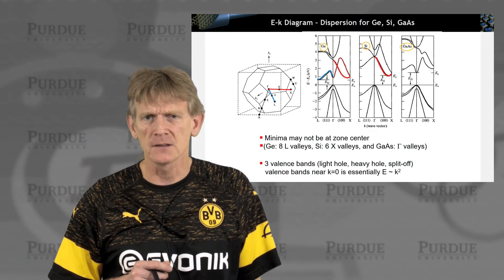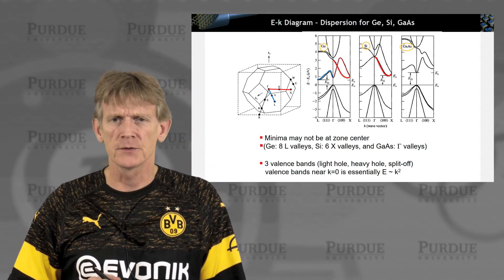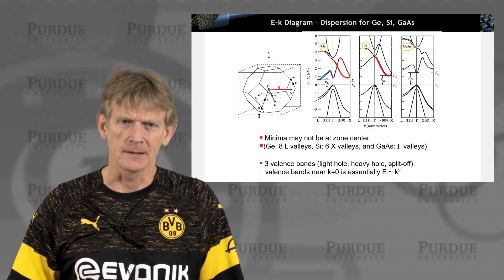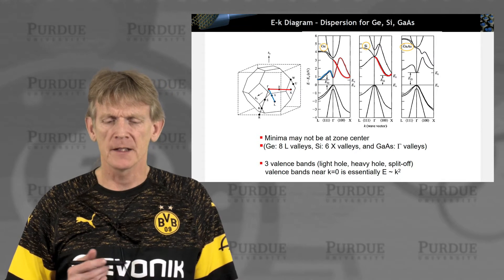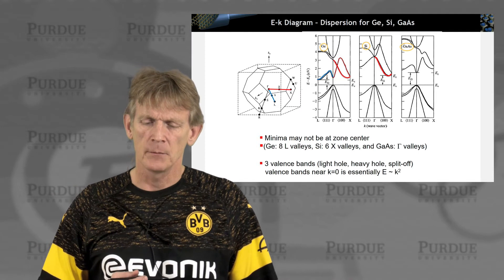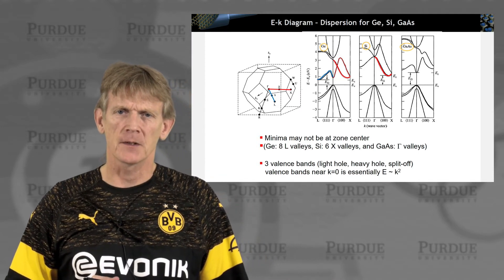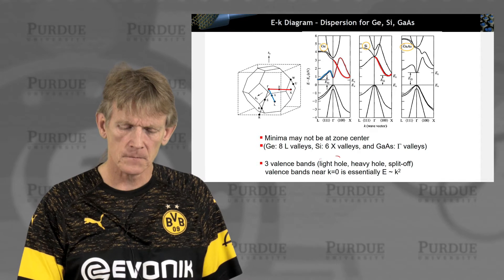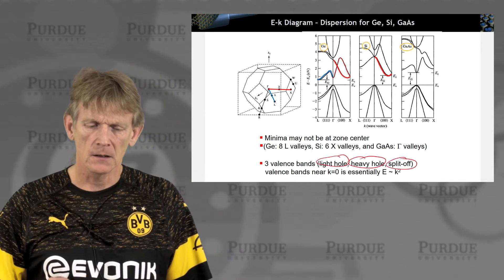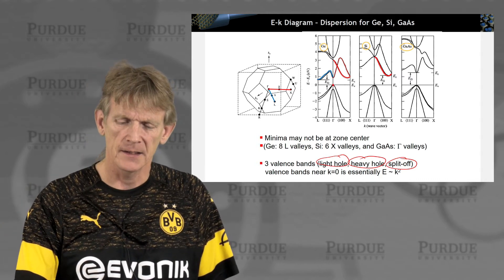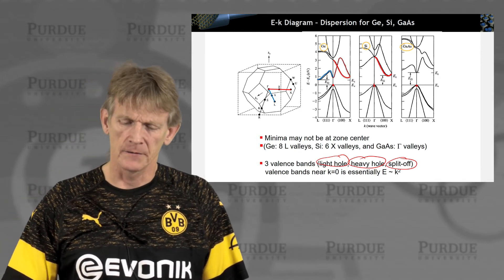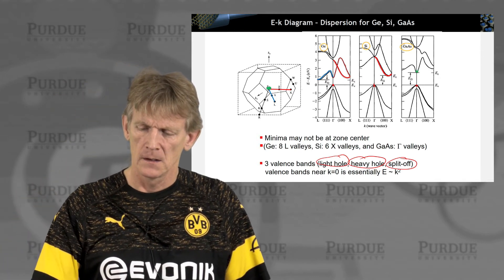Now if we look at the valence bands and you squint a little bit, those three materials look roughly the same. And the same complicated. We'll find methodologies to simplify these bands and how we mostly use them. But there's really three bands you need to keep in mind. There's something called a light hole, a heavy hole, and a split-off band. And they all have their top highest value here at the gamma point. And that's the top of the valence band.